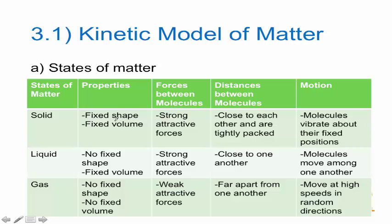For solid, they have a fixed shape and fixed volume. This is due to the strong attractive forces between the molecules and the fact that the particles are close to each other and are tightly packed. In solid, the particles look something like this — they are really close to each other and there is not much space for them to move about.